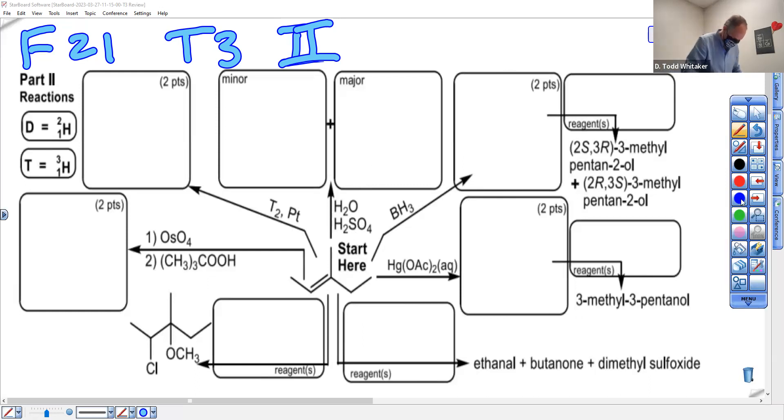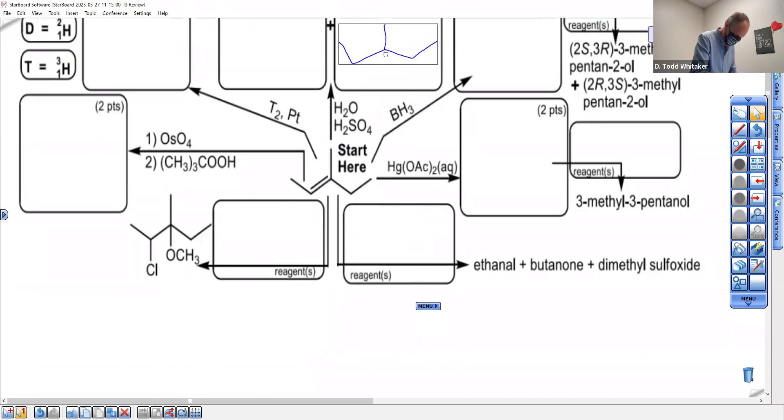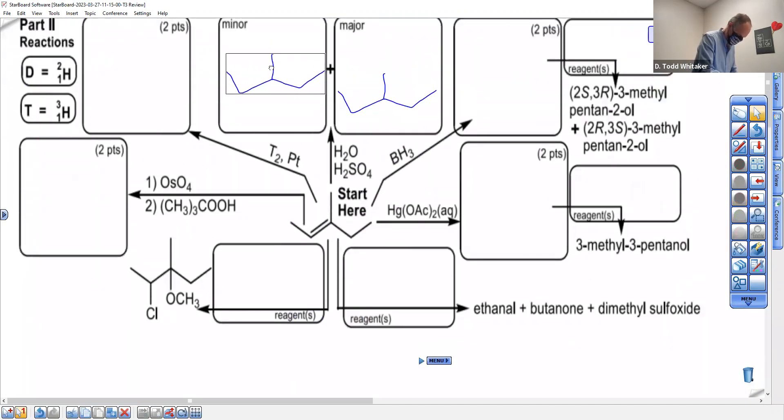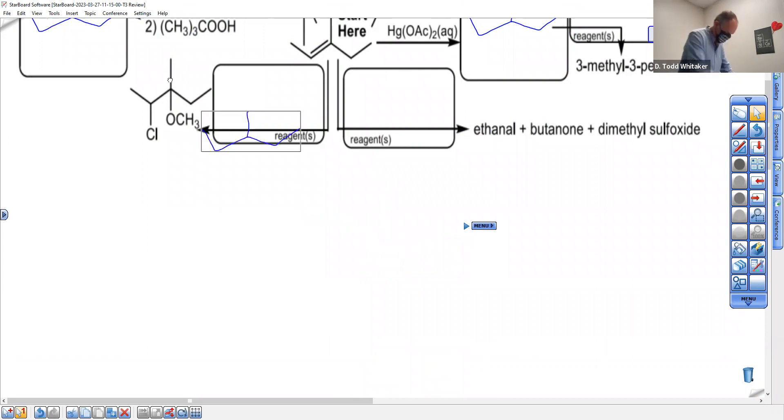The major will be the Markovnikov, so let's get our skeleton copied a bunch of times. I don't want to redraw the skeleton 100 times, so I'm going to draw it one time. It's going to go in all the boxes except for the Ozone, but I don't see Ozone. We got all the skeletons ready.